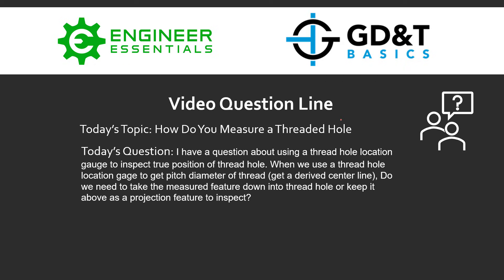The question that was submitted is: I have a question about using a threaded hole location gauge to inspect true position of a threaded hole. When we use a thread hole location gauge to get the pitch cylinder diameter of the thread, in other words the derived center of that thread, do we need to take the measured feature down into the threaded hole or keep it above as a projected feature to inspect?